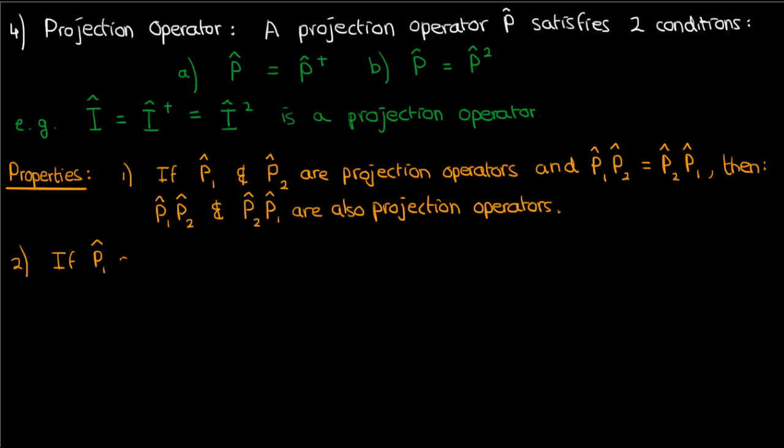The second property is that two projection operators P1 and P2 hat are orthogonal if their product is zero. This is more of a definition rather than a property, if you're being technical.